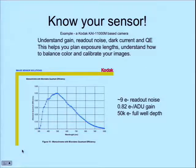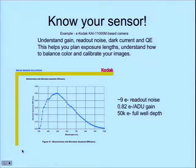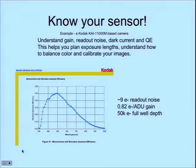This camera has about nine electrons of readout noise. The gain is 0.8 electrons per ADU, so 0.8 electrons equals about one count. The full well depth is about 50,000 electrons. Knowing the full well depth is important because cameras become non-linear and do funny things depending on whether they have anti-blooming or non-anti-blooming sensors. It's important to understand how much light you need to stay in the linear range — in the non-linear range you can't measure magnitudes accurately, and it's hard to balance color because you'll have clipped one of your color channels.